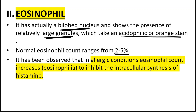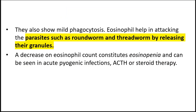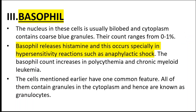Eosinophils range from about 2 to 5 percent of total leukocyte count. They are observed in allergic reactions — an increase in eosinophils is called eosinophilia. They act to inhibit the intracellular synthesis of histamine. They are released in attacking parasites such as roundworms and threadworms by releasing their granules. So in children who have worms, the white blood cells largely involved in attacking those parasites are eosinophils.